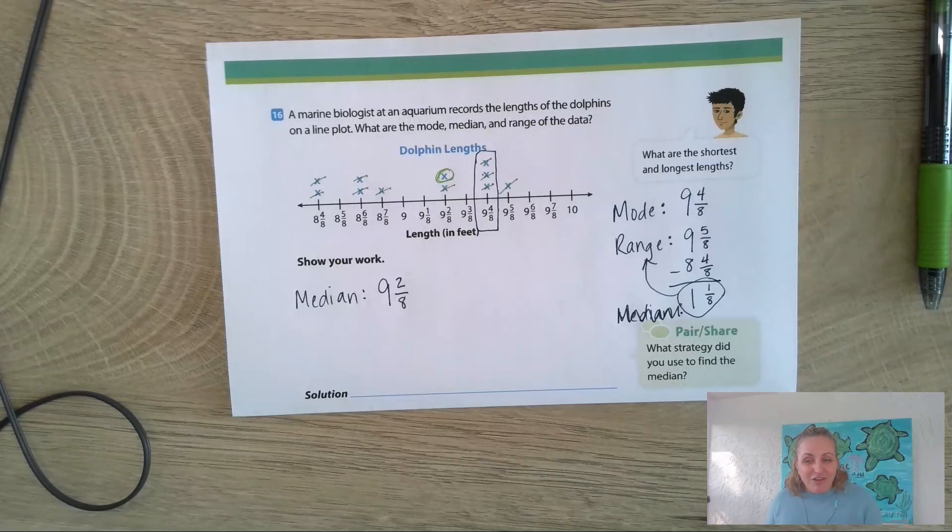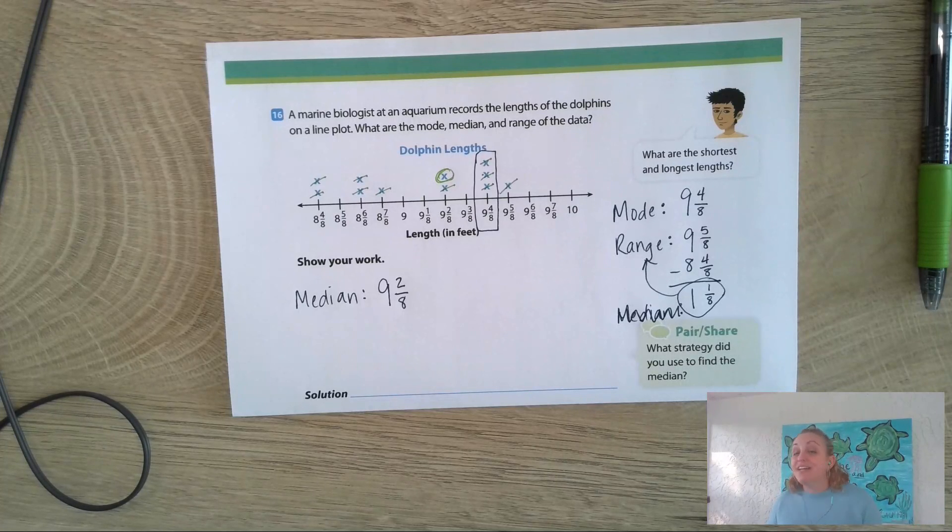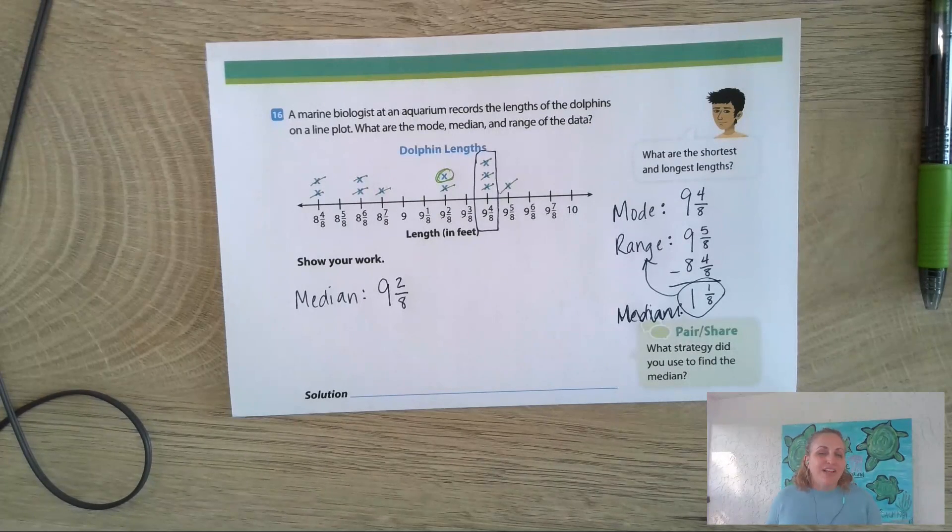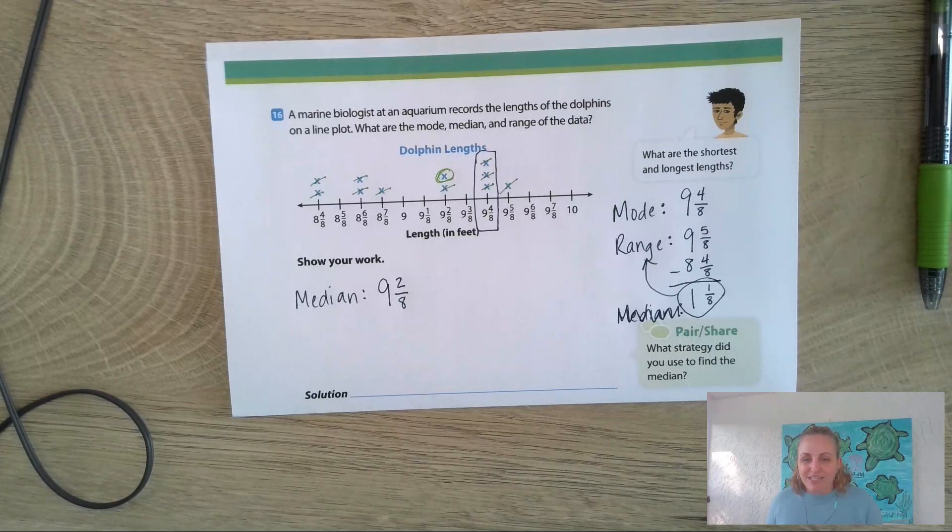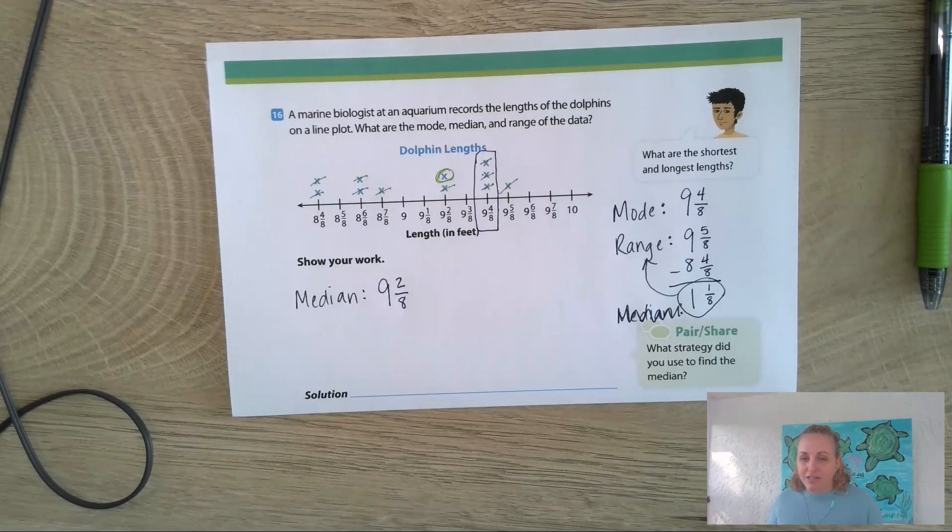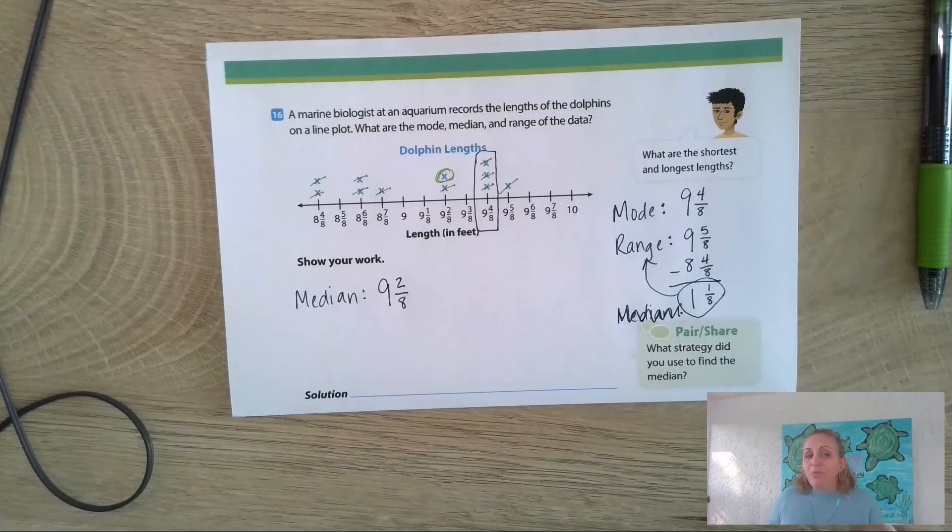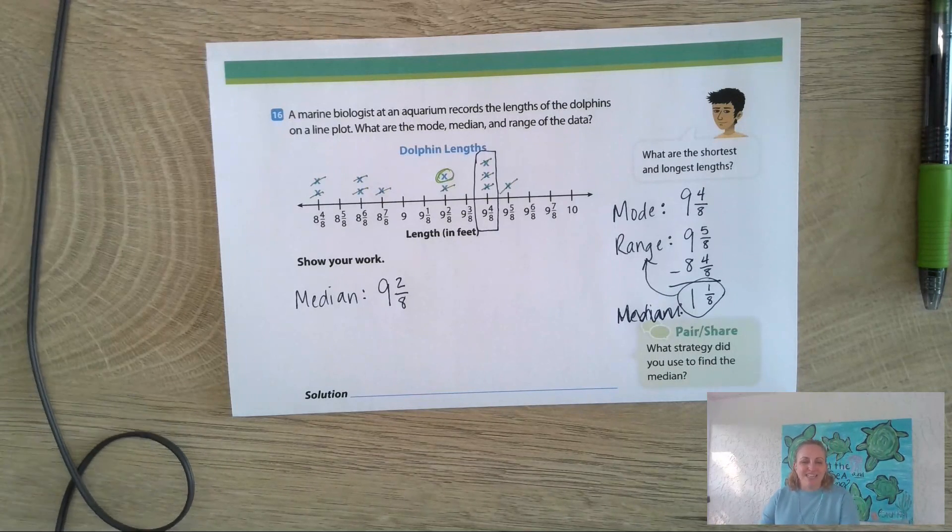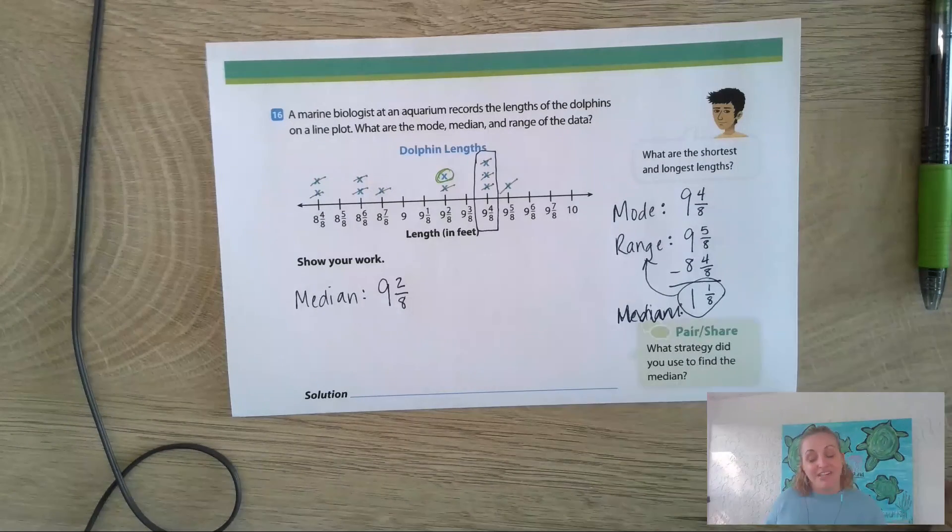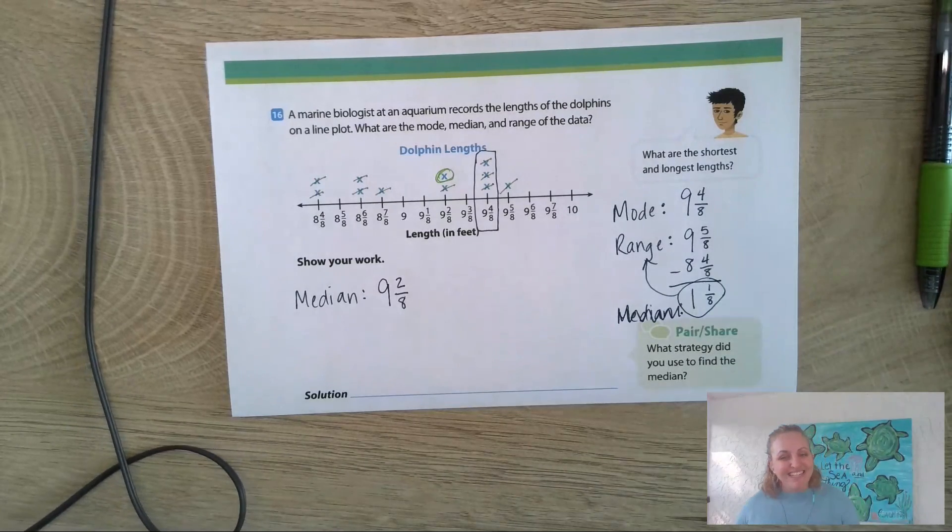After you've finished looking over your answers, I want you to go ahead and work on your lesson activities for today, practicing finding the median, mode, and range of data on a line plot. And then tomorrow, we're going to work on finding the median, mode, and range of data on a stem and leaf plot. See you guys next time. Bye, guys.